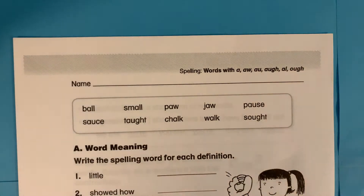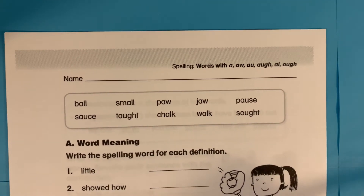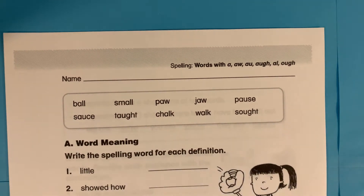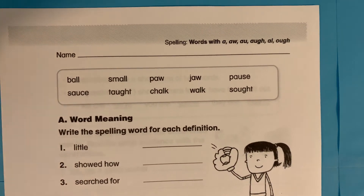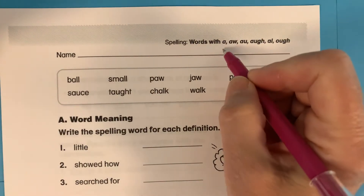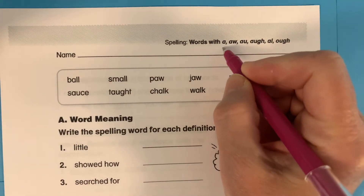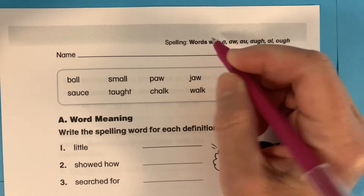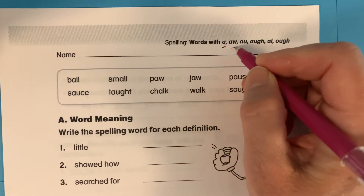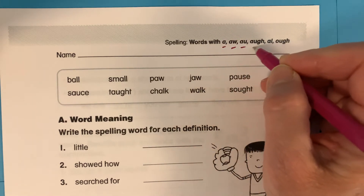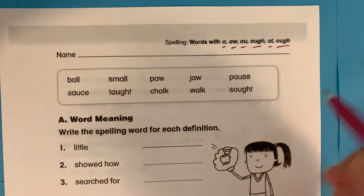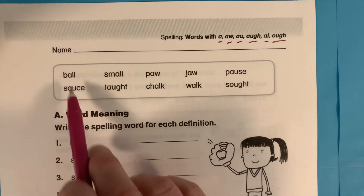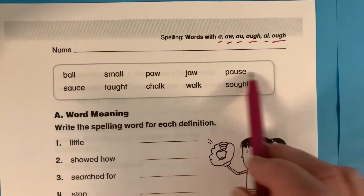All right, and then the next thing you'll be doing today — the first thing that's in your learning pages — is your spelling words using the sound 'ah,' which can be spelled A, A-W, A-U, A-U-G-H, A-L, and O-U-G-H. So it's spelled all those different ways in here.